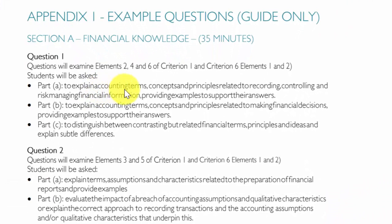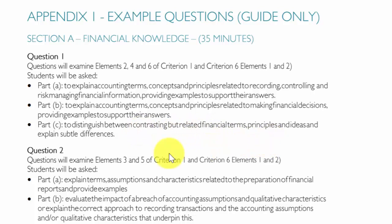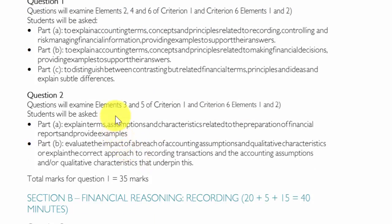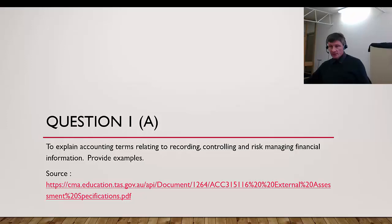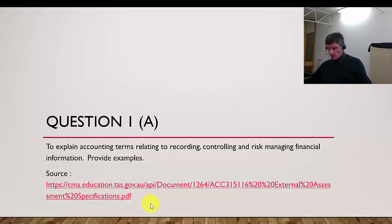Part A talks about accounting terms, concepts and principles relating to recording and controlling. The second one talks about making financial decisions. The third part of question one looks at distinguishing and contrasting related but contrasting terms. Question two is solely related to accounting assumptions and qualitative characteristics. So I've put that into a series of questions that I'm going to talk you through now.